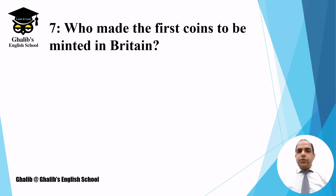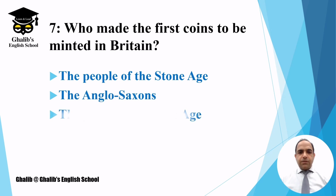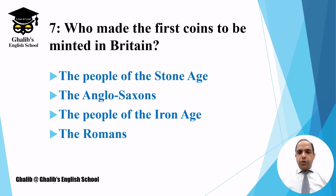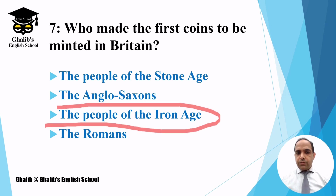Question number seven: who made the first coins to be minted in Britain? The options are the people of the Stone Age, the Anglo-Saxons, the people of the Iron Age, or the Romans. The answer is the people of the Iron Age — they had a very sophisticated culture and were the first to have coins minted.